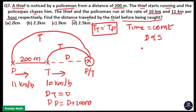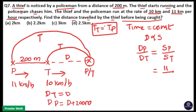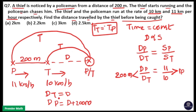So whenever time is constant, distance taken by police divided by distance taken by thief is the same as speed of police divided by speed of thief. The speed of police is 11 km per hour and speed of thief is 10 km per hour, so the ratio of distances is 11 to 10. The difference between 11 parts and 10 parts is one part, and the difference between distance taken by police and distance taken by thief is 200 meters, because the thief travels d and the police travels d plus 200.